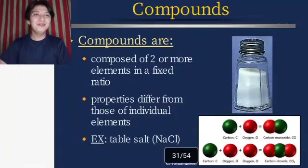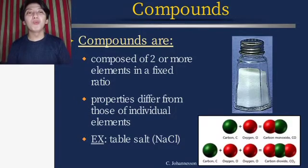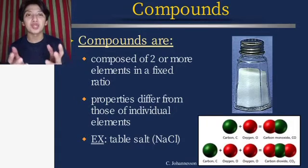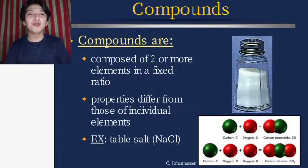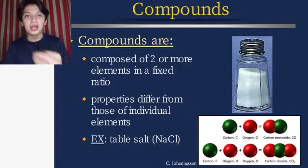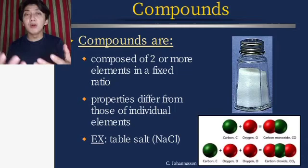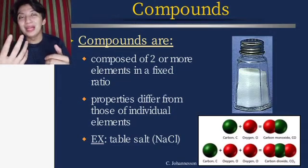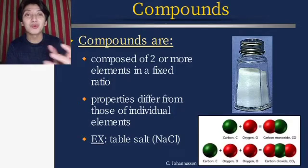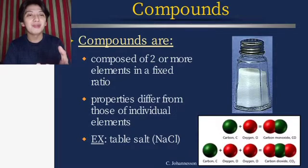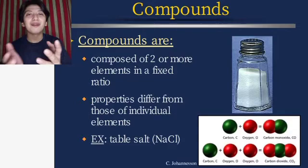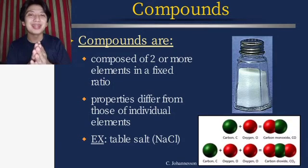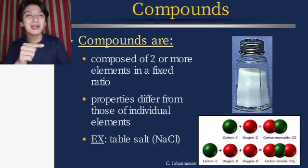Compounds are composed of two or more elements in a fixed ratio, and their properties differ from those of the individual elements. For example, table salt is sodium chloride, composed of sodium and chlorine. Sodium is a metal and chlorine is a gas, but together they form sodium chloride — table salt.